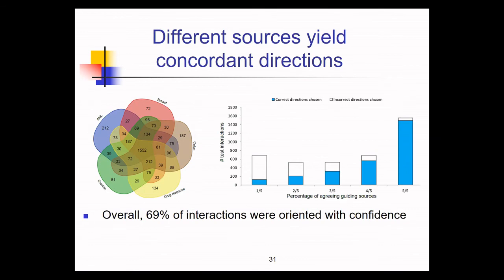Overall, 69% of interactions were oriented with confidence. Unoriented interactions significantly overlap known complexes.